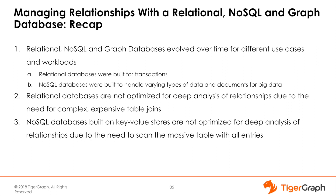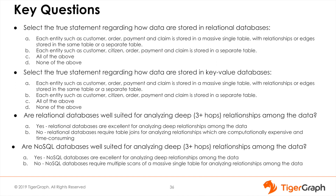Let's have a quick recap of what we've gone over in this module. Relational, NoSQL, and graph databases evolved over time for different use cases: relational databases were built for transactions, and NoSQL databases were built to handle varying types of data and documents for big data. Relational databases are not optimized for deep analysis of relationships due to complex and expensive table joins. NoSQL databases are also not optimized for deep relationship analysis due to the need to scan massive tables. Key quiz questions to keep in mind: How is data stored in relational databases? How is data stored in key-value databases? Are relational or NoSQL databases well suited for analyzing deep relationships among data?